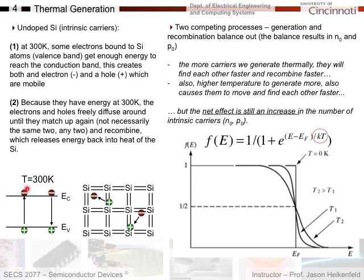At 300K, the created electrons and holes move around and eventually find each other — not necessarily the same two, but any pair can line up and recombine, with the electron dropping back into the valence band. Both annihilate each other, releasing energy as heat to the silicon. So thermal generation of carriers returns energy as heat. We have two competing processes — generation and recombination — that balance out, resulting in the equilibrium concentrations N0 and P0.